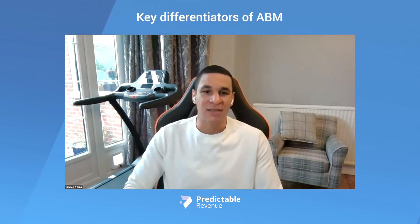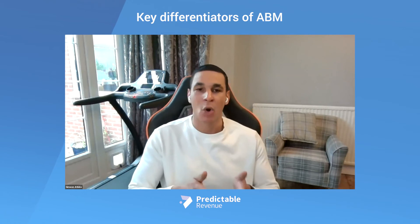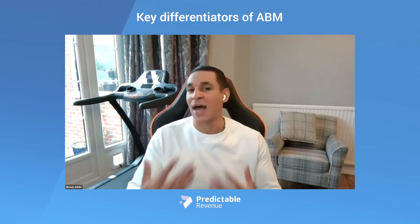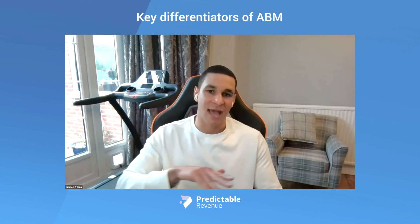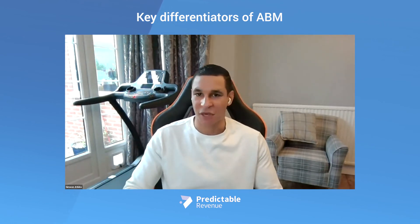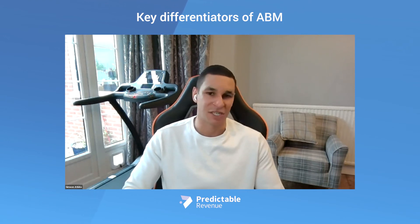Because sales reps are already talking with an audience that's been predetermined to have a good product fit and will probably have been engaged at some point in the sales cycle, there's less of a need for cold calling. Another beauty of ABM is the fact that you're going after specifically the decision makers or the people with high influence within that company. What that's going to do is start to shorten sales cycles — you're almost going straight to the top, rather than going through other stakeholders that you'd encounter with more traditional, broader inbound marketing, where you're generally attracting people lower down on the decision-making ladder.